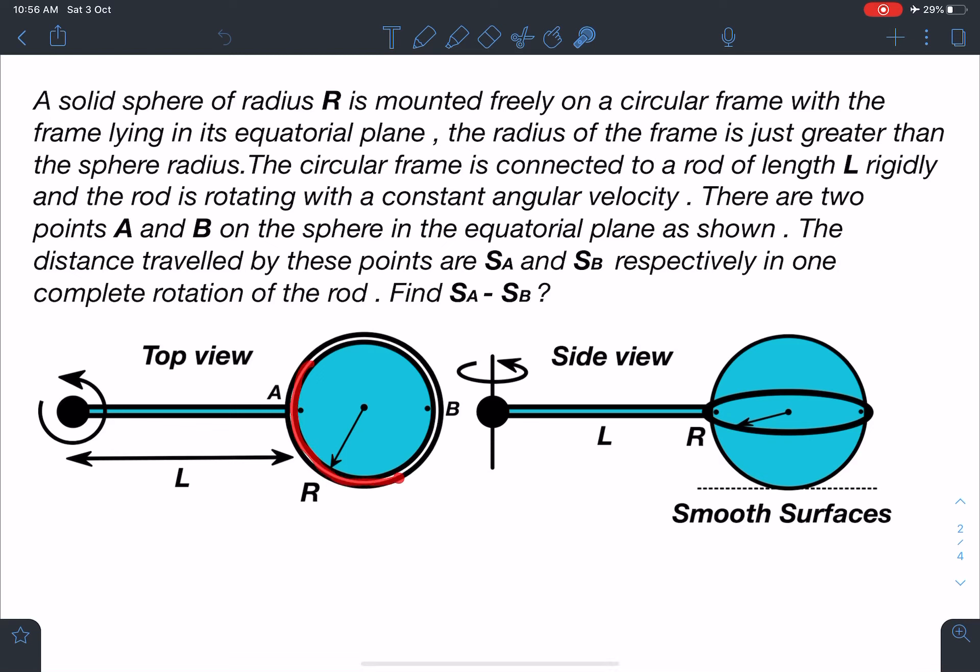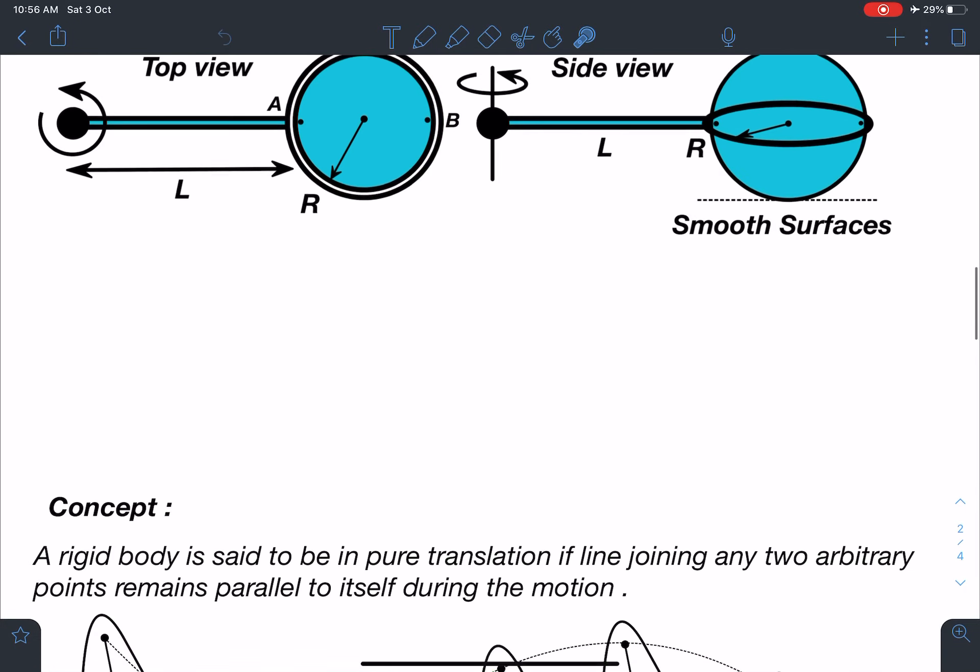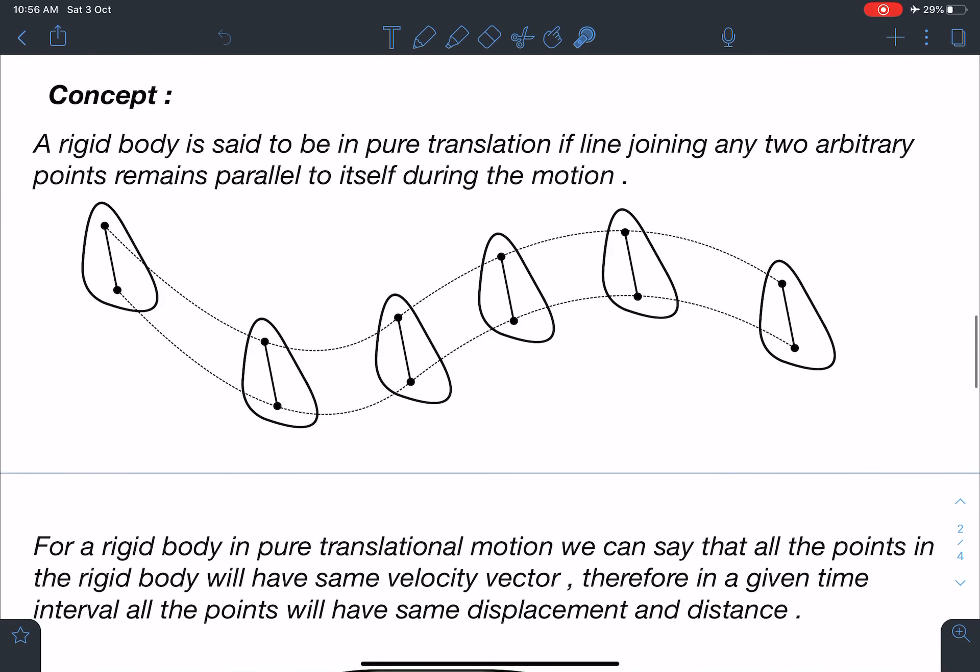So let's discuss the concept part. It's a very simple problem yet most of the people fail to solve this question correctly. A rigid body is said to be in pure translation.